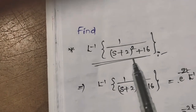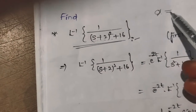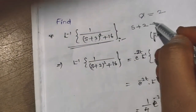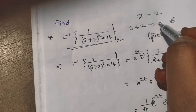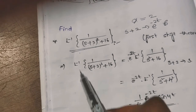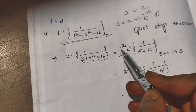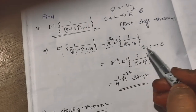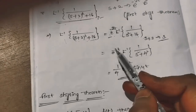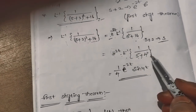L-inverse of 1 by (s+2)² plus 16. Here, s plus A equals s plus 2, so A is equal to 2. According to the first shifting theorem, s plus 2 is changed to e^(-2t). So L-inverse of 1 by (s+2)² plus 16 changes to e^(-2t) into L-inverse of 1 by s² plus 16.